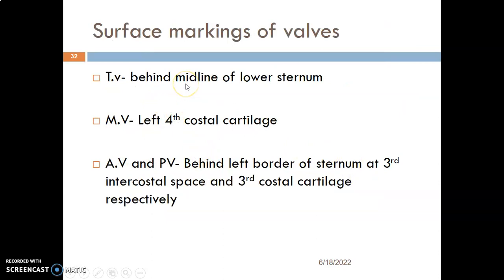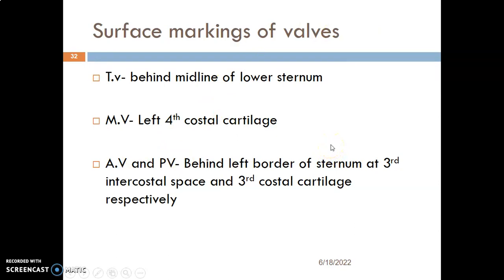Regarding surface markings: the tricuspid valve is behind the midline of the lower sternum. The mitral valve is found at the left fourth costal cartilage. The aortic valve is behind the left border of the sternum at the third intercostal space, while the pulmonary valve is at the third costal cartilage — slightly above the aortic valve.